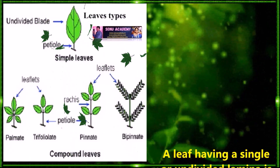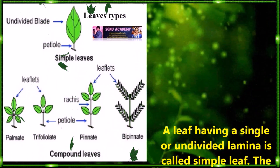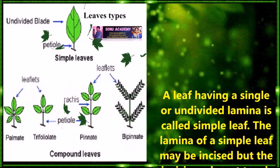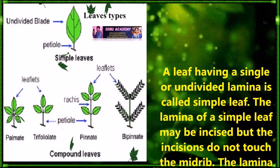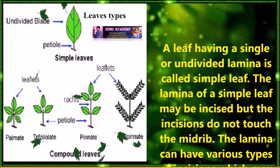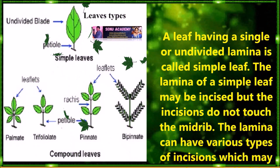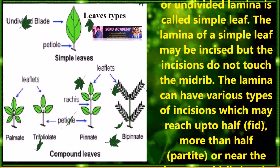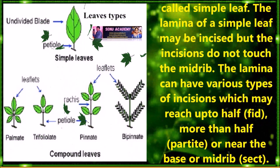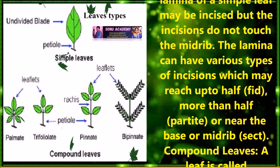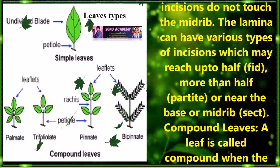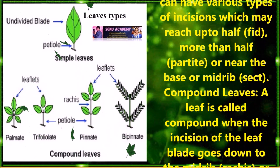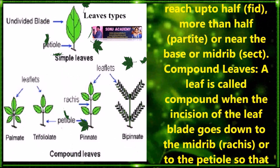Now let us discuss about types of leaves. A leaf having a single or undivided lamina is called a simple leaf. The lamina of a simple leaf may be incised but the incisions do not touch the midrib. The lamina can have various types of incisions which may reach up to half, more than half, or near to the base or midrib.